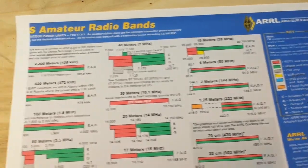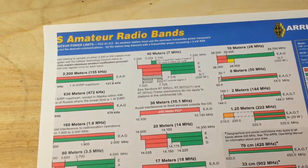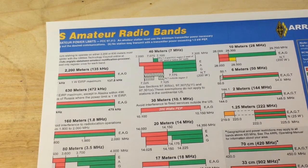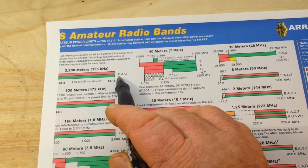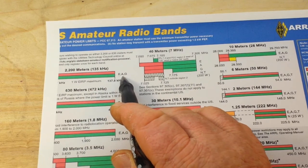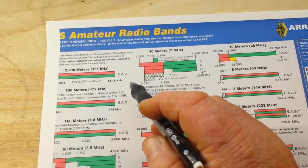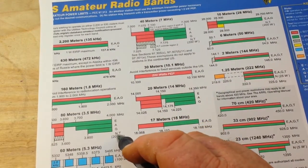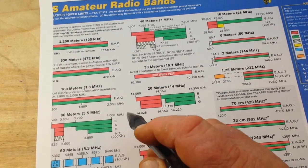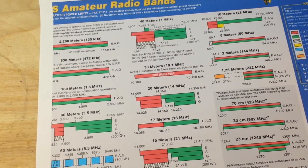Let's start down on this end of the scale, which is what's considered high frequency. From 3 to 30 megahertz is considered high frequency. If we look down here in the 2,200 meters, there are privileges for Extra, which is the highest, Advanced — which really doesn't exist anymore — and General. And it's like that most of the way down until you get to 80 meters, where you see that Novice and Technician are allowed to do shortwave in just a small smidgen of the band.